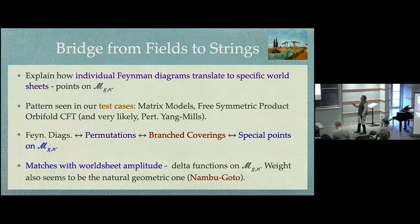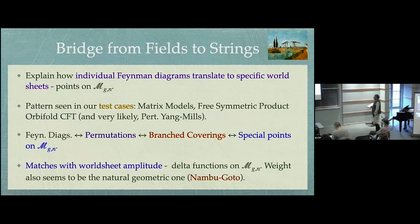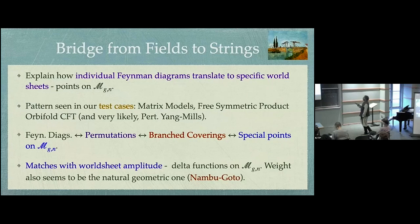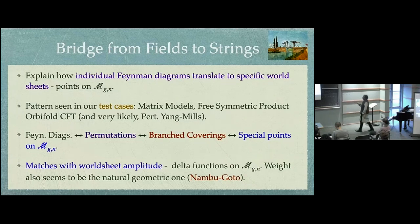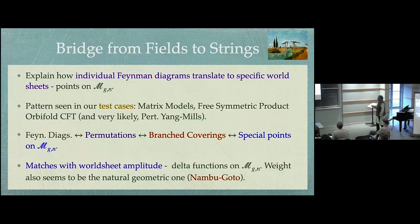The heart of the logic is a correspondence between Feynman diagrams and permutations, which in turn are related to branched coverings — holomorphic coverings — which correspond to special points on moduli space. As physicists, we think we understand everything about Feynman diagrams, but there's an interesting way of recasting them that is particularly appropriate if you want to view them as a dual string theory. What makes it compelling is that it matches in these cases with worldsheet amplitudes having delta function support on these same special points.